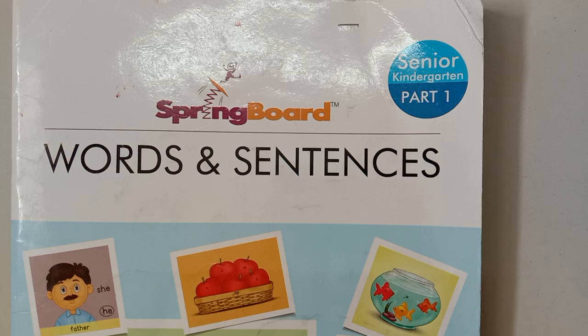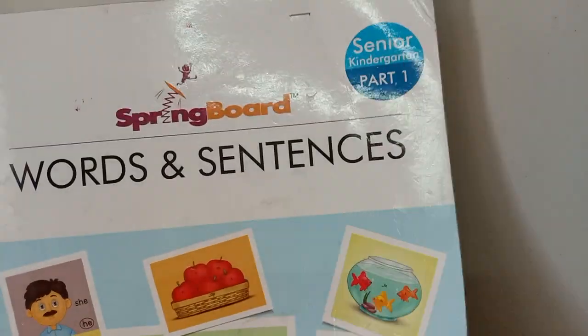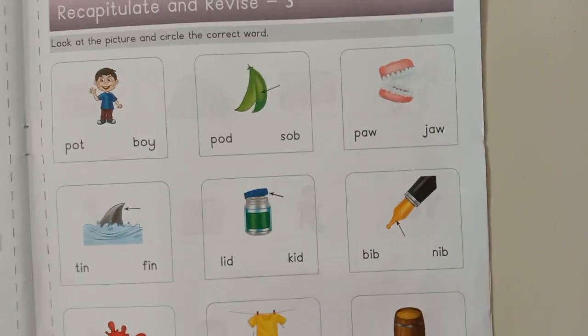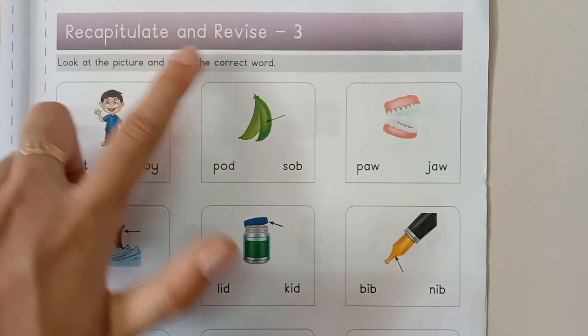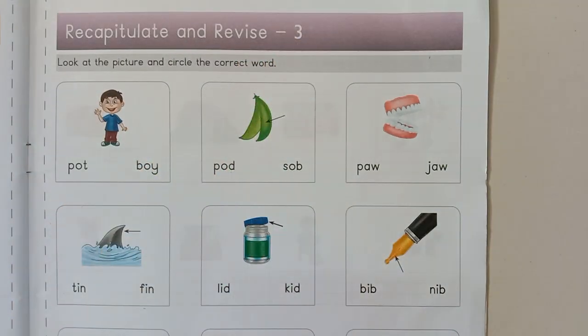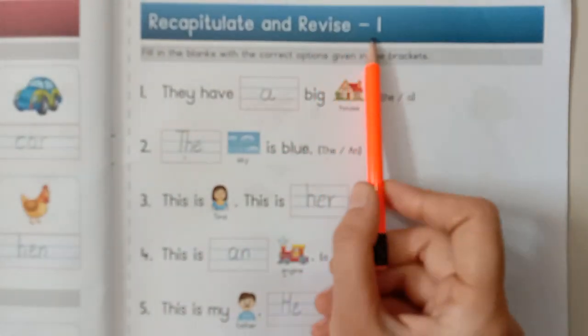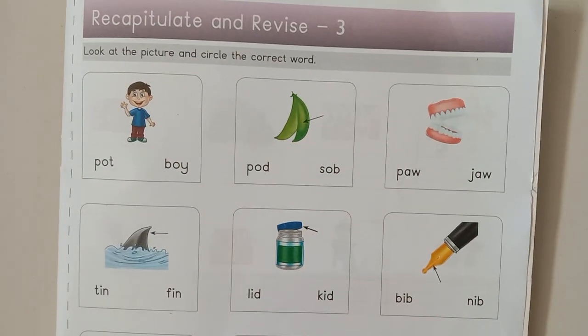Now everyone, open your eyes and open your Words and Sentences Part 1, page number 71 — Recapitulate and Revise 3. Last time we learned Recapitulate and Revise 2 and before that Recapitulate and Revise 1. Now we learn page number 71, Recapitulate and Revise 3.